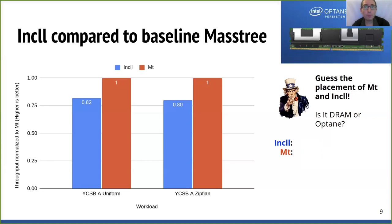Now I'm presenting a similar figure, but the only difference is the placement. Both baseline Masstree and in-cache line logging now use Optane. The slowdown of in-cache line logging is 18% for the uniform access pattern and 20% for the Zipfian access pattern. The results are very similar to the previous figure, with only a minor performance degradation in Zipfian. The overhead of in-cache line logging is almost insensitive to Optane placement. It seems in-cache line logging maintains a similar throughput degradation when used with Optane.